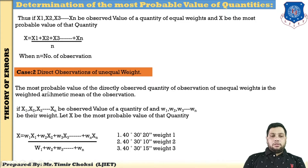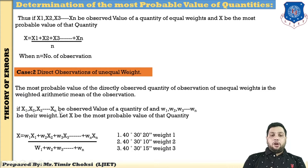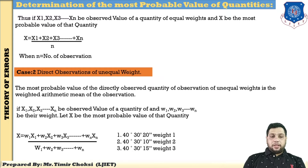How to find the most probable value for direct observations of unequal weight: the most probable value is the weighted arithmetic mean of the observed values. If x1, x2, x3 up to xn are the observed values and w1, w2, w3 up to wn are their respective weights, then the most probable value x equals (w1·x1 + w2·x2 + ... + wn·xn) / (w1 + w2 + ... + wn), which is the sum of weight-times-value divided by the sum of individual weights. Try to find this example at home as well.